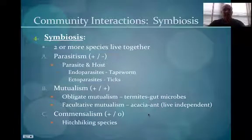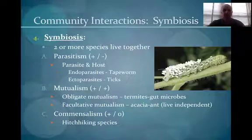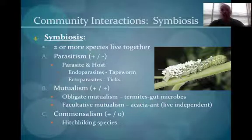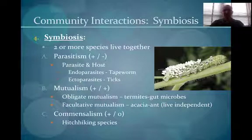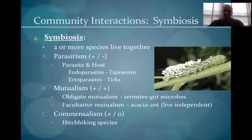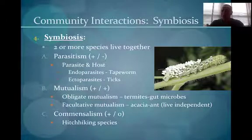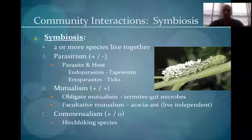Next is symbiosis — when two or more species live together with different possible effects. In parasitism, one organism benefits and the other is harmed. The benefiting organism is the parasite; the one harmed is the host. There are two types: endoparasites, like tapeworms, which are inside the body; and ectoparasites, which are on the outside. For example, a tobacco hornworm with parasitic wasps laying eggs on it — the wasp larvae bore into the hornworm and eat it from the inside out, eventually killing it when they emerge.